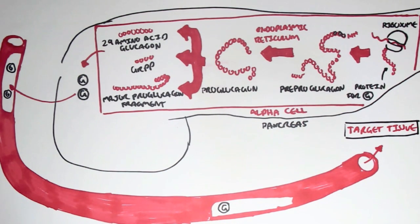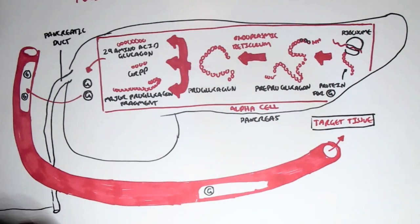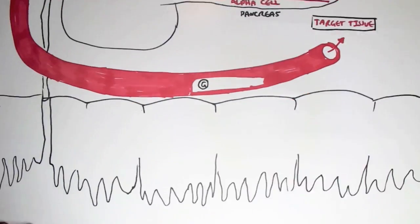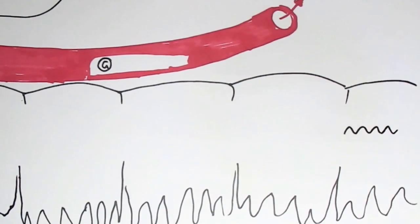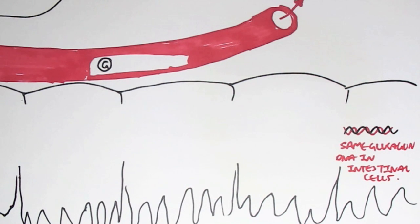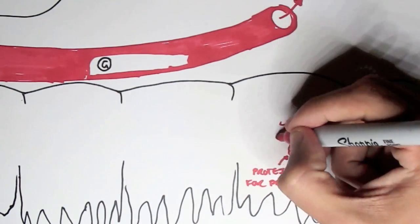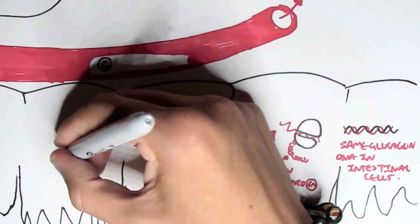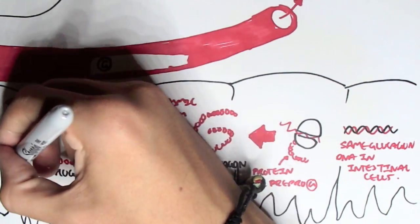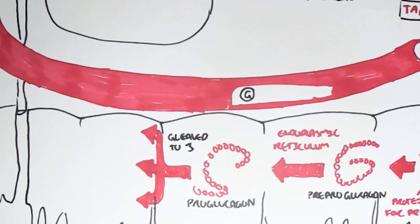Now let's look at the intestines. The pancreas has a pancreatic duct where it can secrete its digestive enzymes into the duodenum to help in the digestive process after we eat. In the duodenum, the intestinal cells also have a gene that transcribes for glucagon — very similar genes to those found in the alpha cells. This gene makes an mRNA for glucagon, exactly the same, and then the ribosome translates it to a pre-proglucagon. The pre-proglucagon then travels to the endoplasmic reticulum to form proglucagon, exactly the same as in the alpha cells, except the proglucagon is cleaved by a different mechanism to form three different polypeptides.